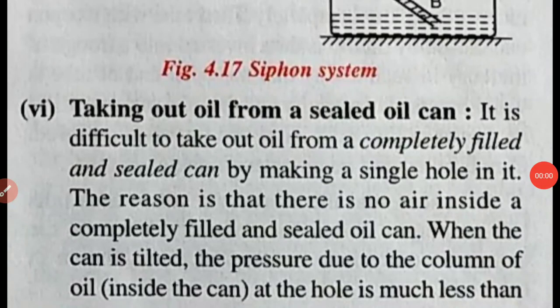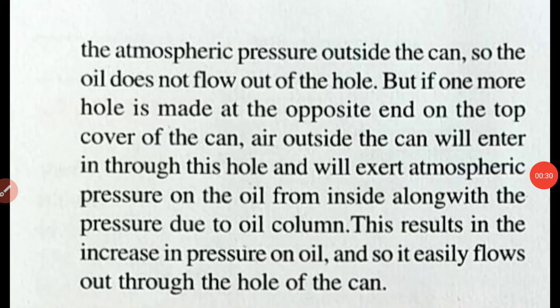The last consequence is taking out oil from a sealed oil can. It is difficult to take oil out through a single hole in a completely filled or sealed can because there is no air inside. When the can is tilted, the pressure from the oil column at the hole is much less than the atmospheric pressure outside, so oil does not flow out. If a second hole is made at the opposite end on the top cover, air enters through it and exerts atmospheric pressure on the oil from inside, combined with the oil column pressure, causing the oil to flow out easily.